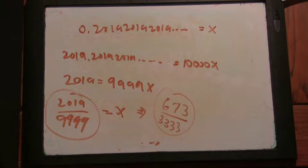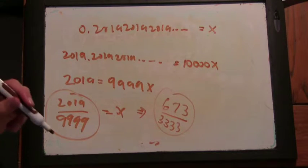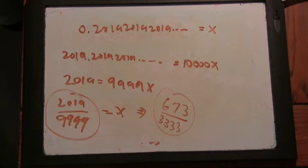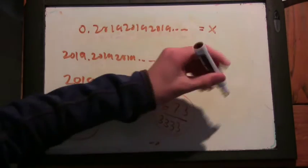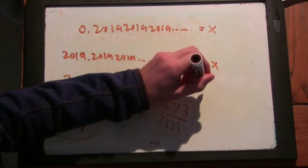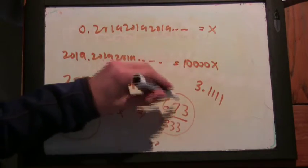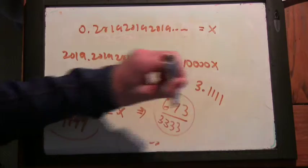And could we check if this is in lowest terms? Well, we can be fairly confident that 3333 is not divisible by 673. How have you developed this confidence? Well, this is 3 times 1111. And then 673 does not go into this. How do you know?